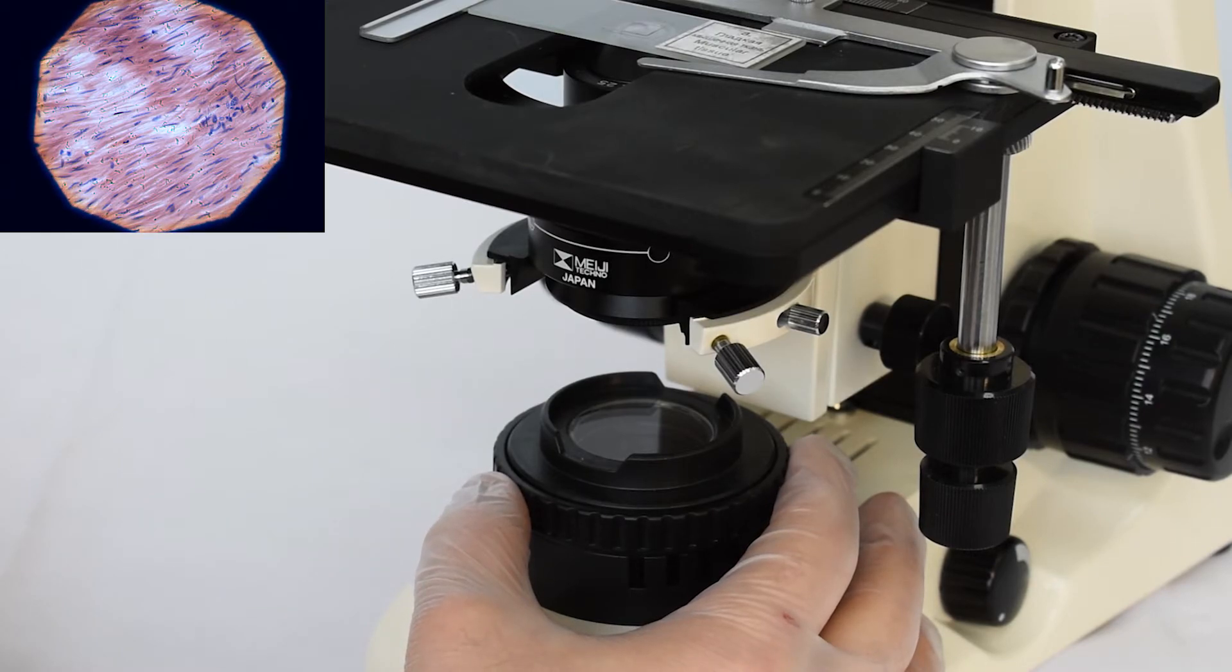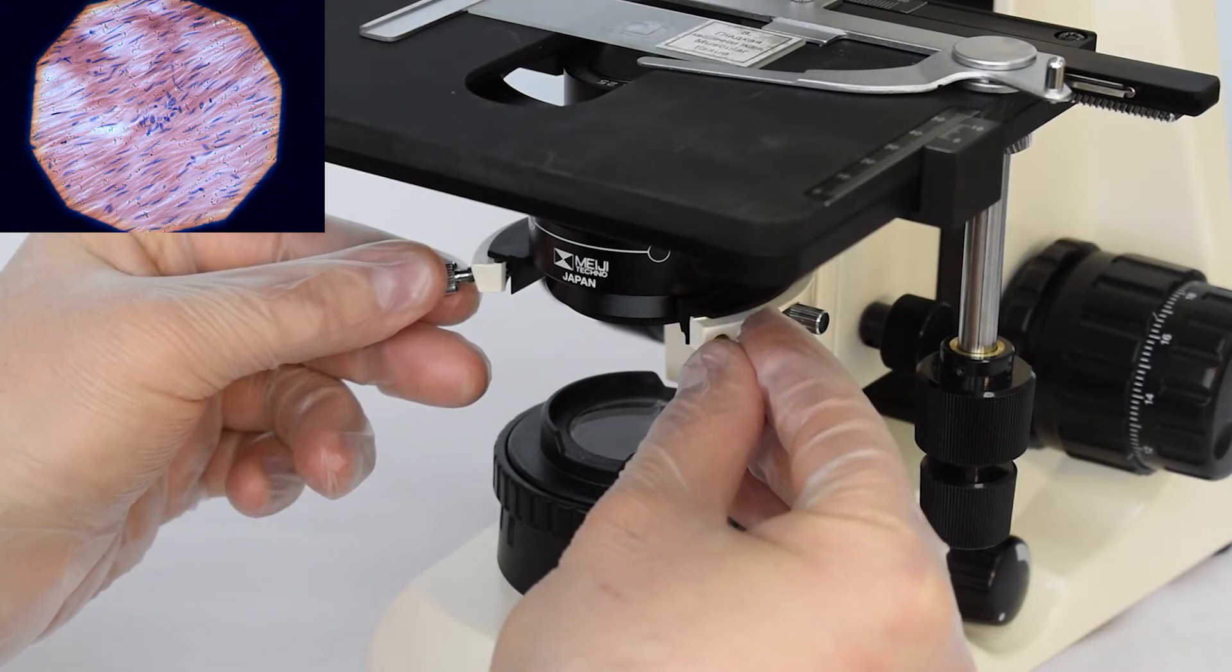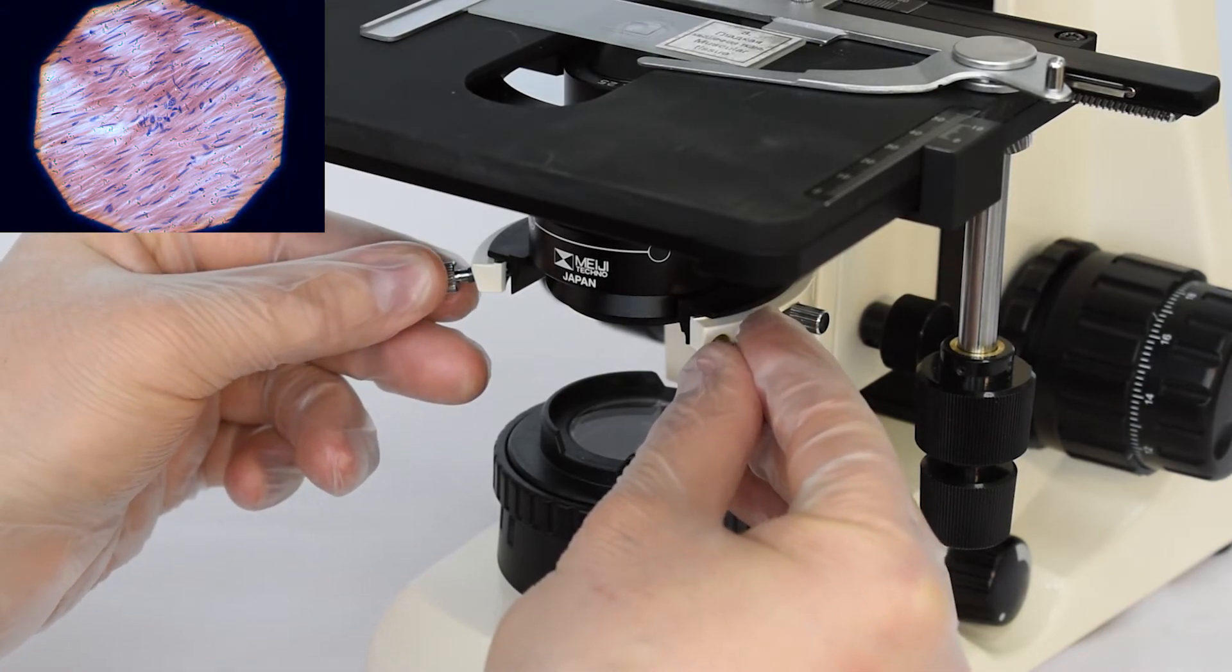In the process of centering the field diaphragm needs to be opened a little, after which if necessary the position of the condenser is adjusted again.